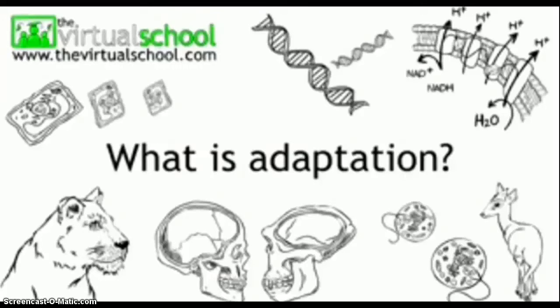We've been learning about the plants and animals that belong to the forest ecosystem, the wetland ecosystem, and desert ecosystems. The organisms — organisms are just living things — have adapted or changed to meet the needs of their environment to help them survive. You're going to be learning about specific animals in Utah's ecosystem and how they have adapted.